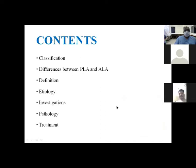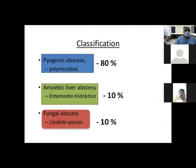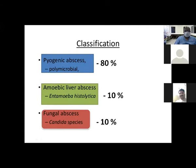We will cover classification, differences between pyogenic and amoebic liver abscess, definition, etiology, investigations, pathology, and treatment. Regarding classification: pyogenic liver abscess is usually polymicrobial, commonly E. coli and Klebsiella, and accounts for about 80% of liver abscesses. About 10% is due to amoebic liver abscess, whose incidence has come down with earlier treatment using metronidazole. It now mainly affects alcoholics. Fungal abscess is very rare, except in immunocompromised patients on chemotherapy or immunosuppressive drugs.